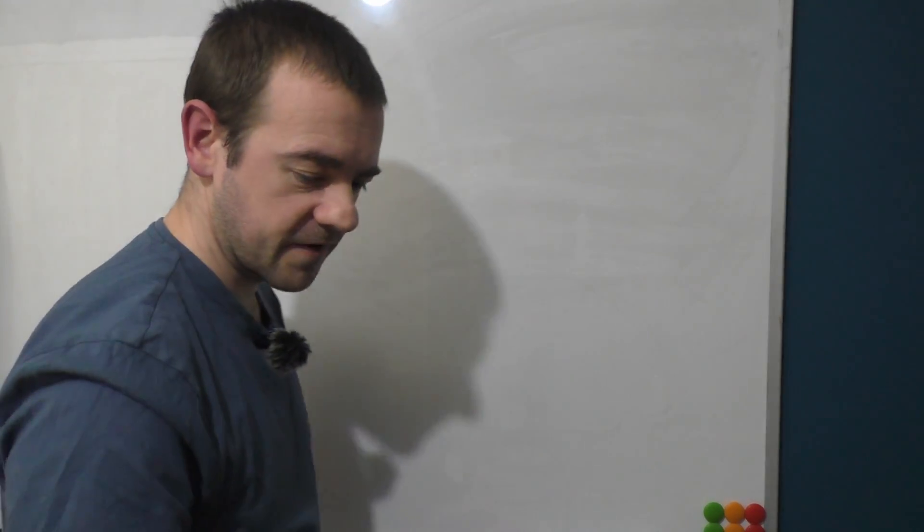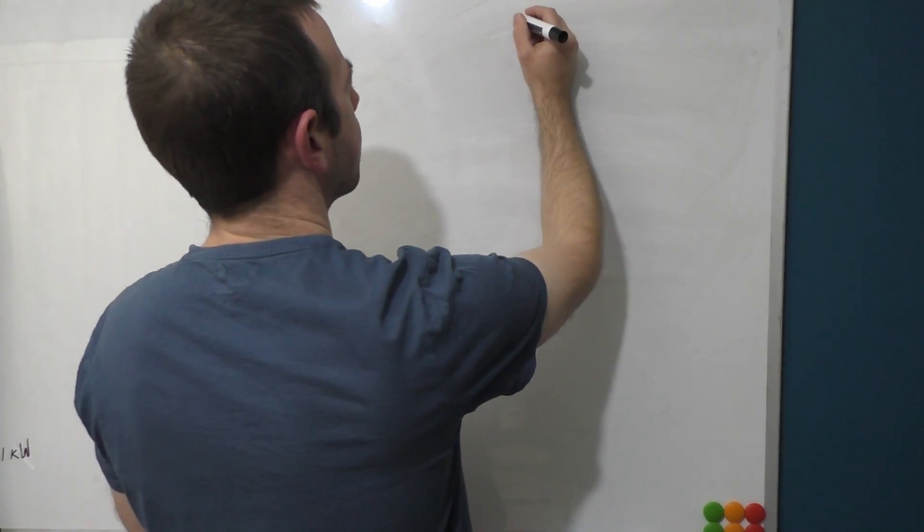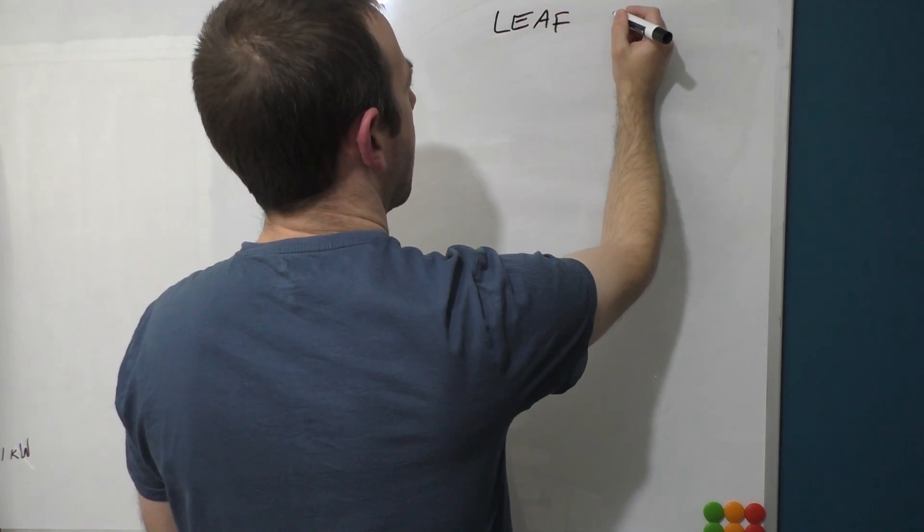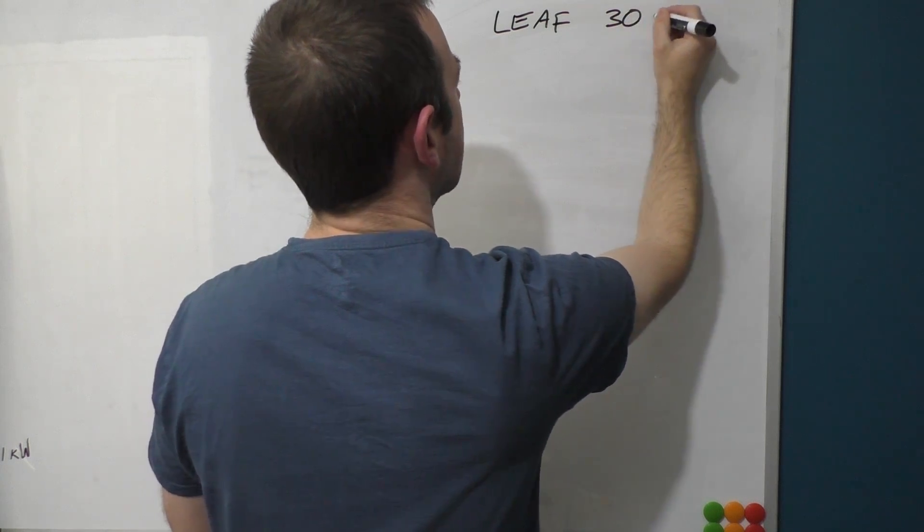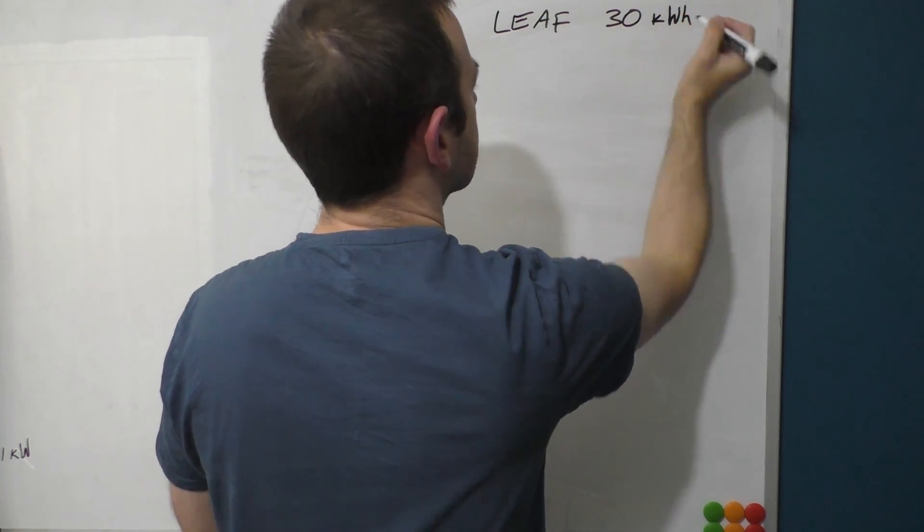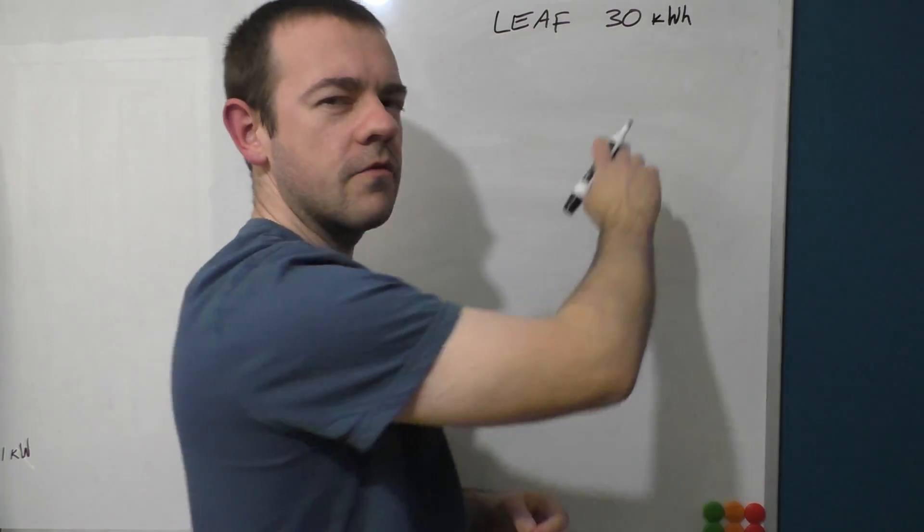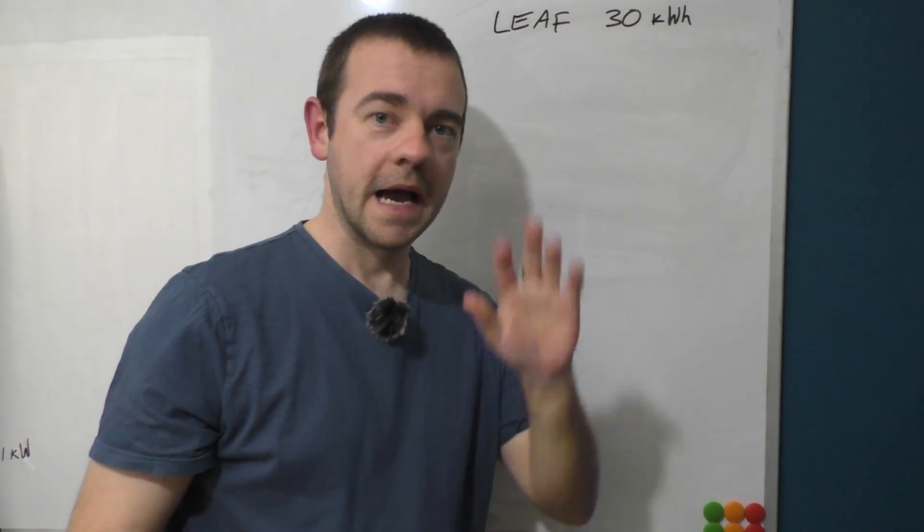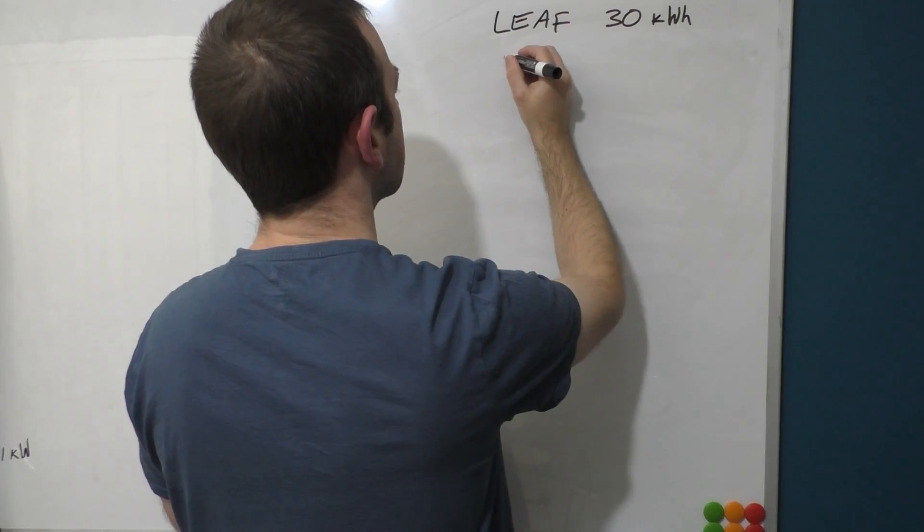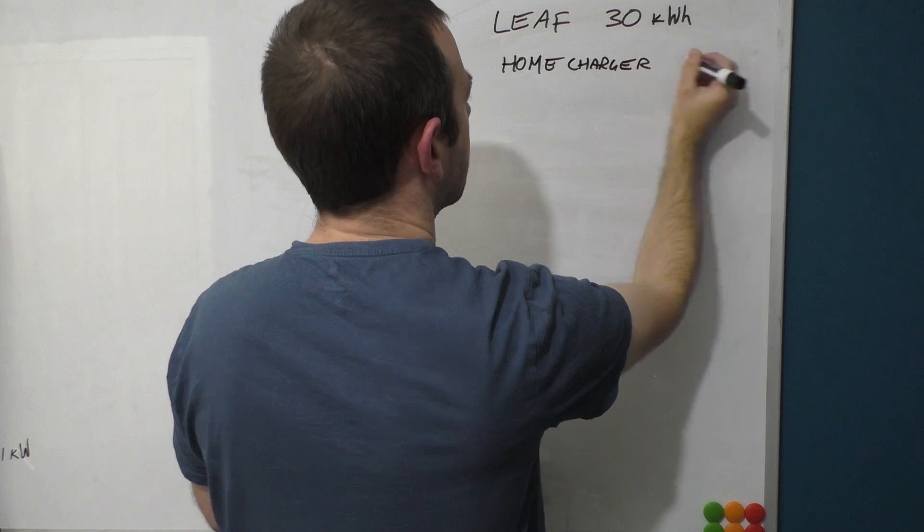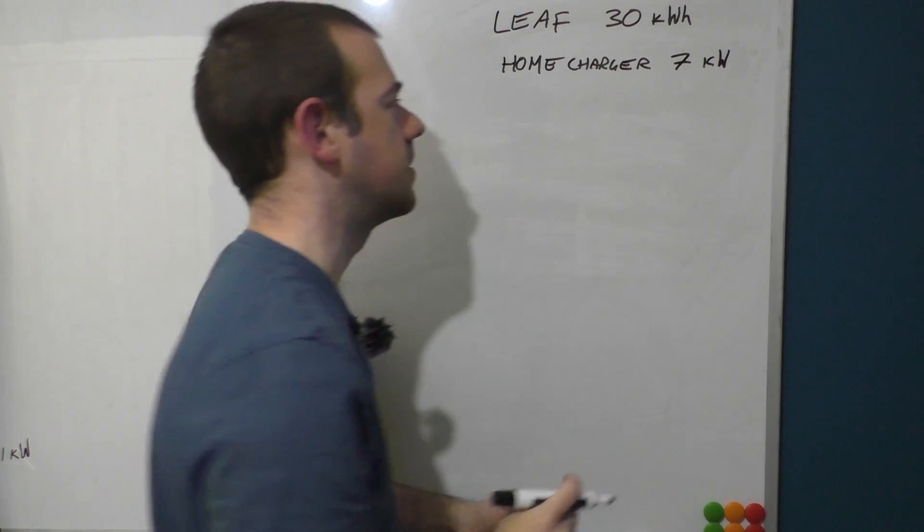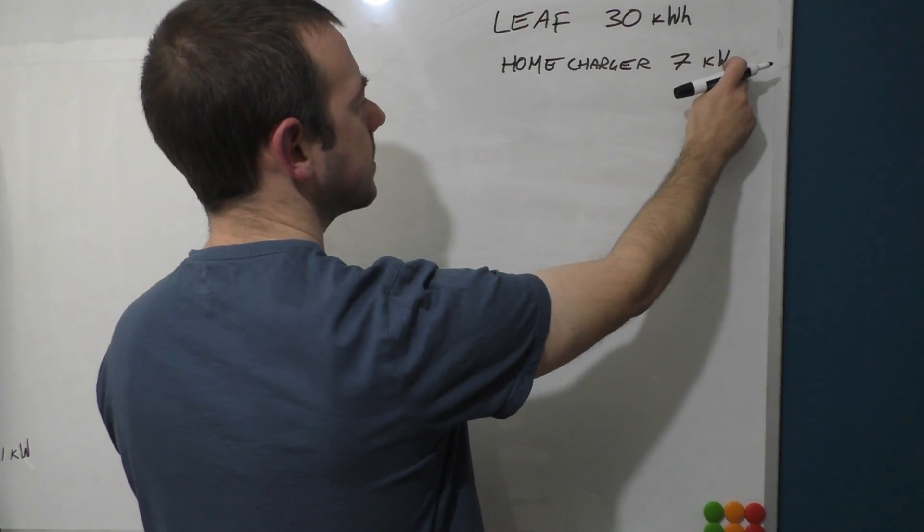Let me now rub that out once more and we'll just very briefly go over a specific example again. If I have a Nissan Leaf with a 30 kilowatt-hours, remember it's small K, large W, small H. If you don't get that the right way around then anal people will be annoyed, which is why sometimes I deliberately write it wrong. Hi Jason if you're watching. So home charger runs at seven kilowatts.